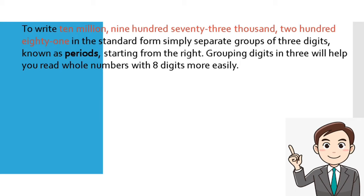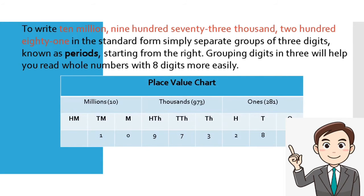Let's have this example. We have ones, thousands, and millions. In the ones period, we have hundreds, tens, and ones.